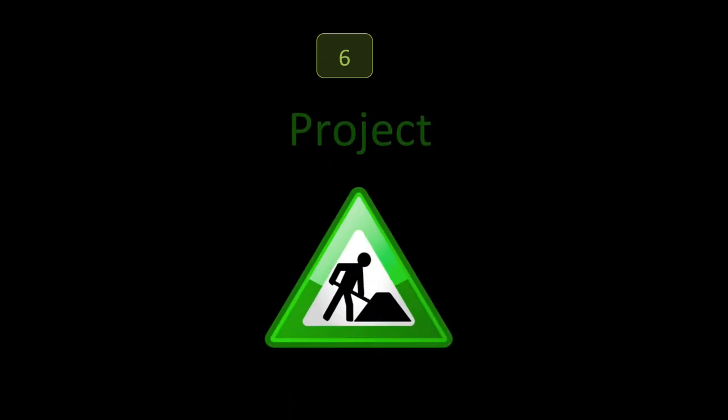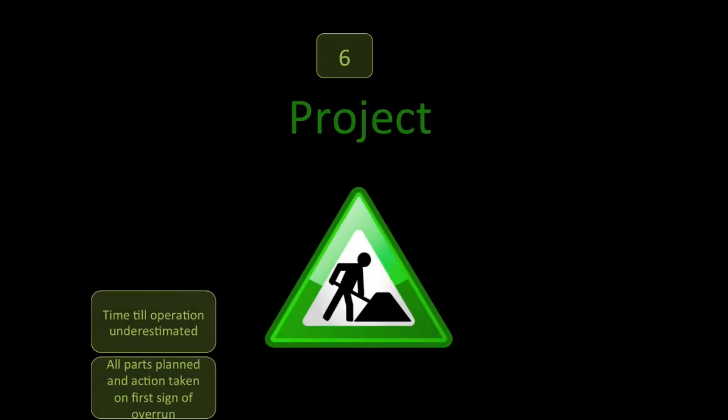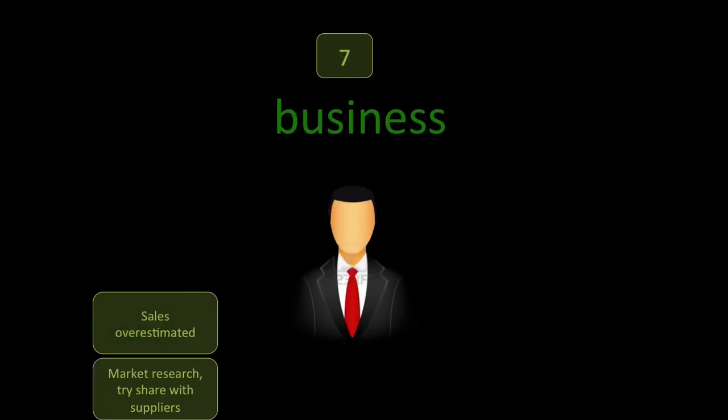Six: project risks. Project risks are that the time or operation was underestimated, and a nice mitigation is that all parts should be planned so that this is reduced. We also have business risks. That's where you overestimate your sales, and you can mitigate this by doing some market research or sharing the risk with suppliers.